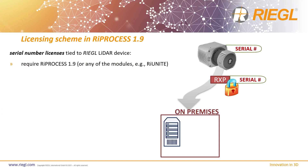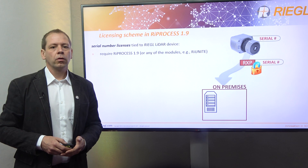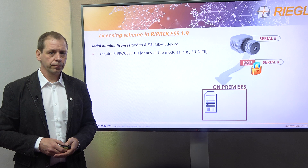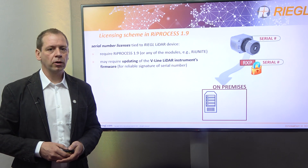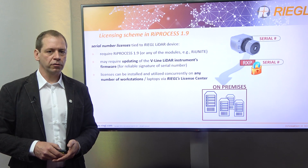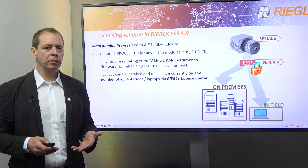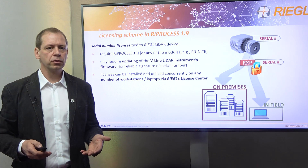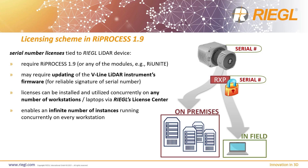Let me give you some more details on the new licenses which are tied to the serial number of a distinct Regal Laser Scanner. Please note that these can only be used with RAI Process 1.9 or in combination with the new UNITE module. An update of the VLINE Instruments firmware may be necessary. New instruments are already delivered with the option to sign raw data files reliably. Serial number licenses can be installed and used on any number of workstations via the Regal License Center, enabling an infinite number of parallel processing instances and most efficient use of system resources like CPU cores or graphic adapter cards. Serial number licenses do not require any dongles, which makes them especially useful for mass data processing in cloud environments.